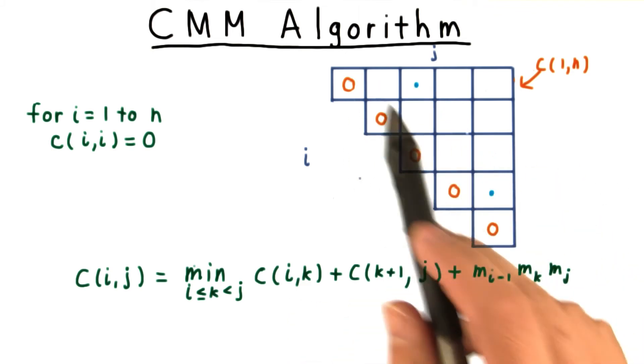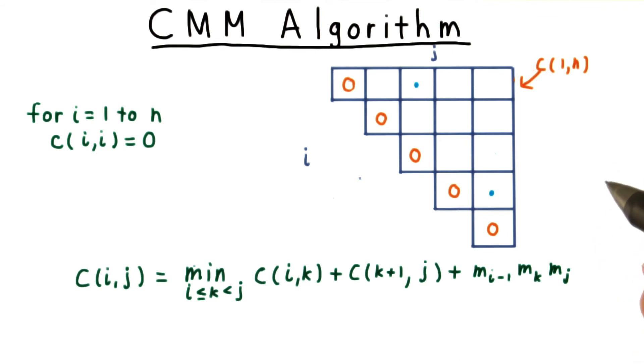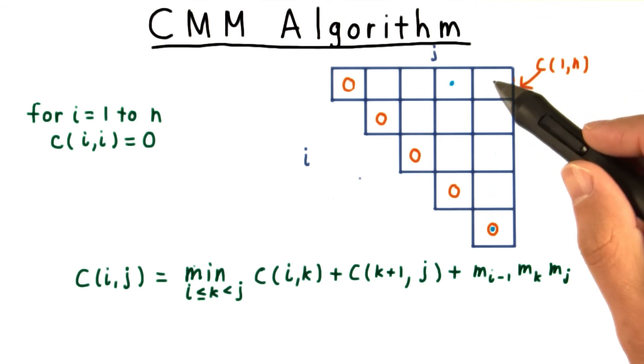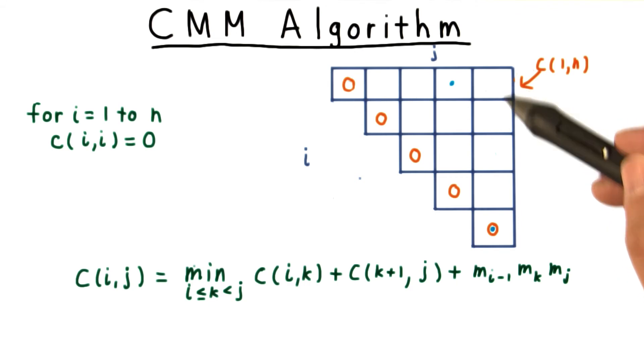When k equals 3, we consider these, and so forth. In general, every entry depends on all the elements to the left and downwards of it.